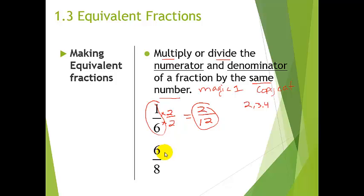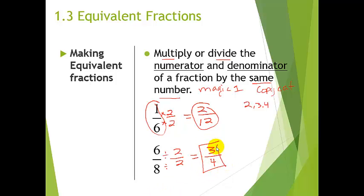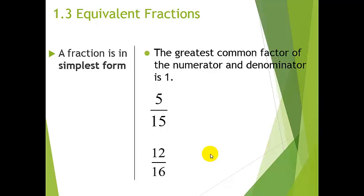You could also multiply by 2, but I'm going to divide instead. I know both numbers are even, so I can divide the top and the bottom by 2 — that's the magic one, the copycat. So 6 divided by 2 is 3, and 8 divided by 2 is 4. These are equivalent fractions with the same value that just look different. There's nothing else I could factor out, so this is the simplest form.